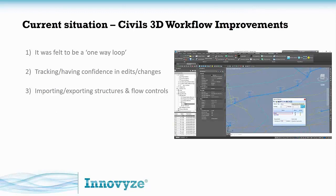The current issue is a one-way loop — we want seamless two-way exchange between Microdrainage and Civil 3D. At the click of a button, you should be able to accept either the Microdrainage version or the Civil 3D version. You need confidence in tracking edits and constant changes, and if integration is seamless and instantaneous, that removes an awful lot of time and pain. Importing and exporting structures and flow controls is another major task that the development team has succeeded in very successfully.